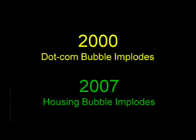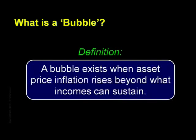So how would we know that we're in an asset bubble? What do they look like, and what can we expect when one bursts? The Fed famously likes to claim that you can't spot one until it bursts. But actually you can, and the definition is pretty simple. A bubble exists when asset price inflation rises beyond what incomes can sustain. A bubble represents people abandoning reason and prudence for hope and greed.